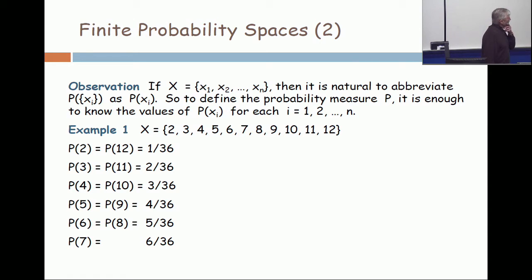So I've got a finite set with 11 elements, the integers 2 up to 12. Now I choose the probabilities: P(2) = P(12) = 1/36, P(3) = P(11) = 2/36, and so on.